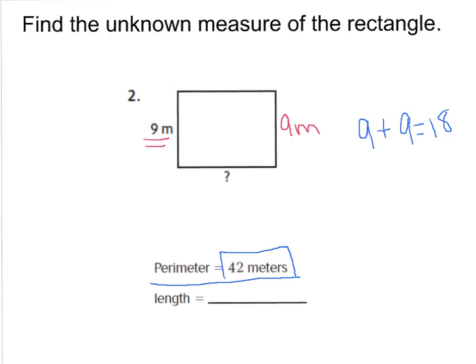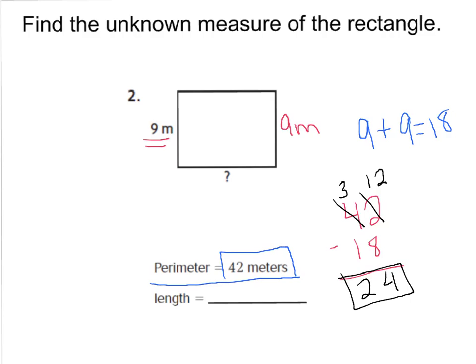I need to get from 18 to 42, so I subtract: 42 minus 18. I need to borrow and regroup — 12 minus 8 is 4, and 3 minus 1 is 2 — giving me a difference of 24. That means between my two lengths it's 24, but I have two lengths so I need to split that 24 in half. 24 divided by 2 is 12 because 12 plus 12 is 24. So my unknown measure is 12 meters.